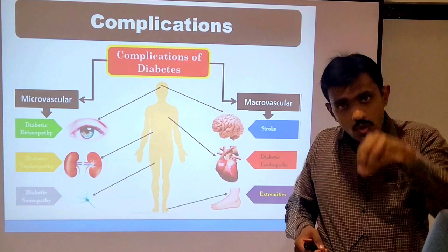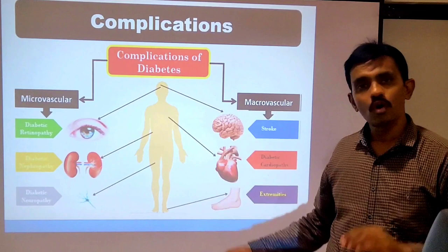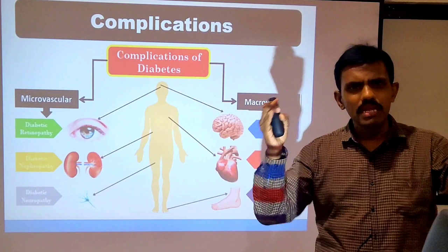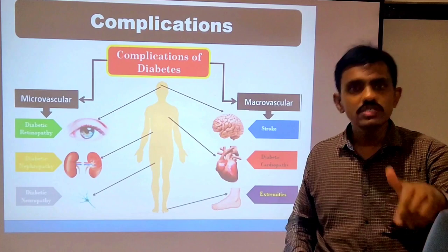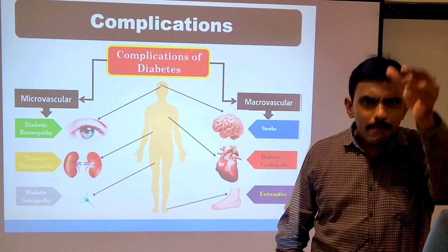Another microvascular complication is diabetic nephropathy. The kidney has millions of nephrons, and the blood vessels supplying them are very small. Diabetes damages these blood vessels, leading to nephropathy — damage to the nephrons. Similarly, neurons in our body are supplied by very small blood vessels, and their damage leads to diabetic neuropathy.